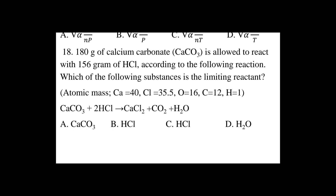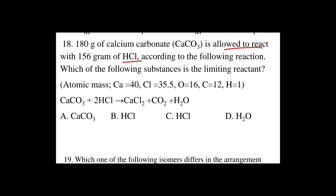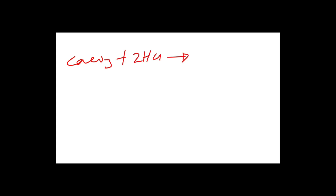Question number 18: 180 grams of calcium carbonate is allowed to react with 156 grams of HCl. Which of the following substances is the limiting reactant? The limiting reactant is the reactant consumed first and determines the amount of product formed. The reaction is: CaCO3 + 2HCl → CaCl2 + CO2 + H2O.